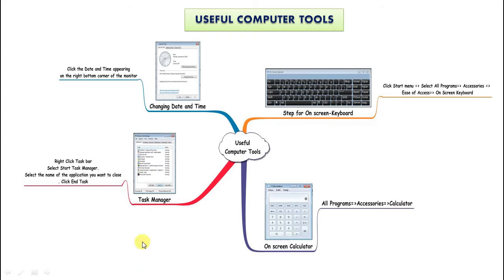Children, when some of the keys of your keyboard are not functioning properly, then we can use on screen keyboard. To open this, click on start menu, select all programs, accessories, click on ease of access, on screen keyboard.